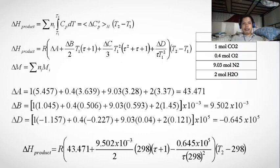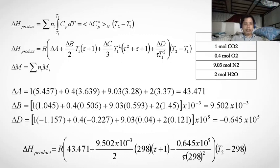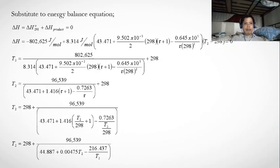The ΔA, ΔB, and ΔD values come from Table C.1 in Smith, Van Ness, and Abbott's Introduction to Chemical Engineering Thermodynamics. We have ΔA = 43.471, along with the corresponding ΔB and ΔD values. These are then substituted into the enthalpy-of-product equation.